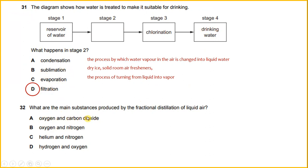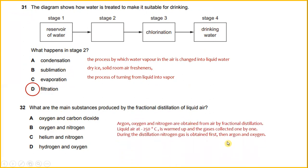Number 32. What are the main substances produced by the fractional distillation of liquid air? Argon, oxygen, and nitrogen are obtained from air by fractional distillation. Liquid air at minus 250°C is warmed up and the gases are collected one by one. Nitrogen gas is obtained first, then argon and oxygen. So the answer would be oxygen and nitrogen.